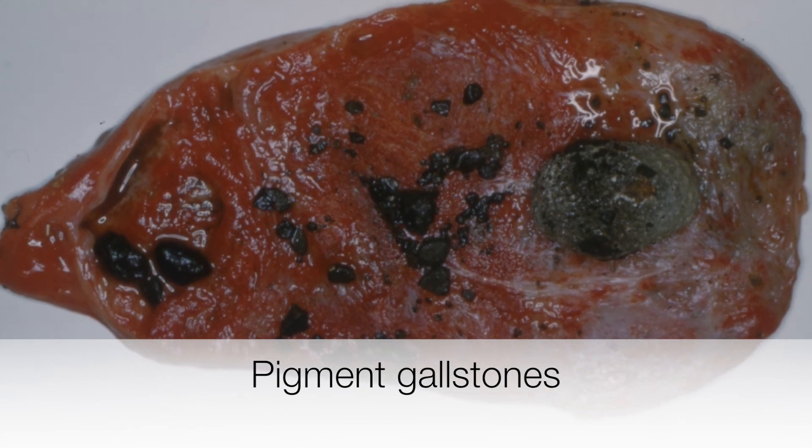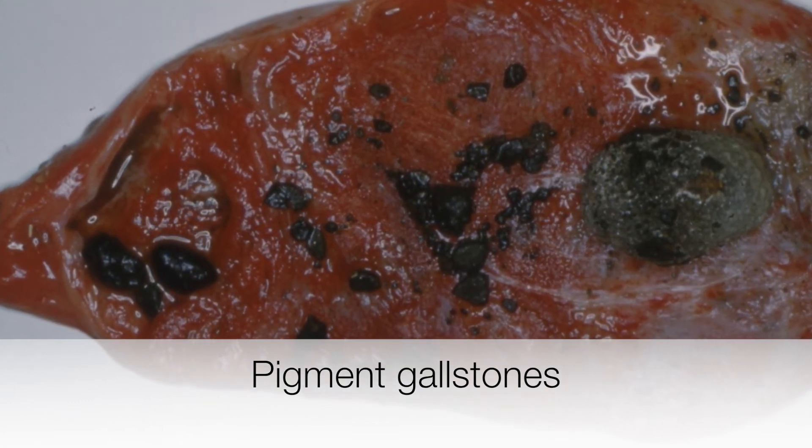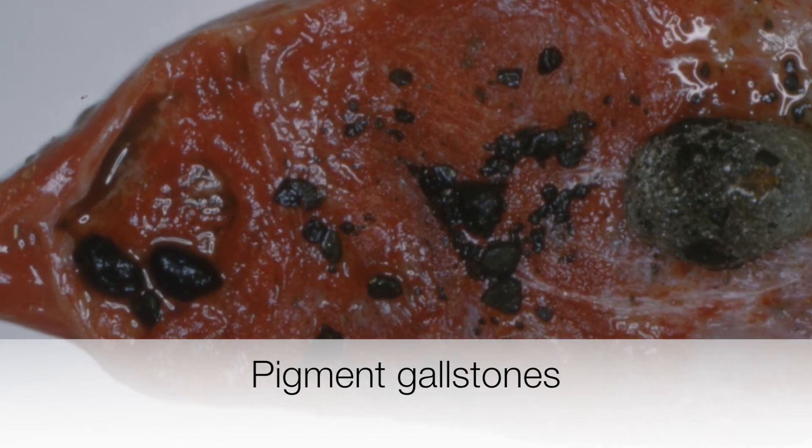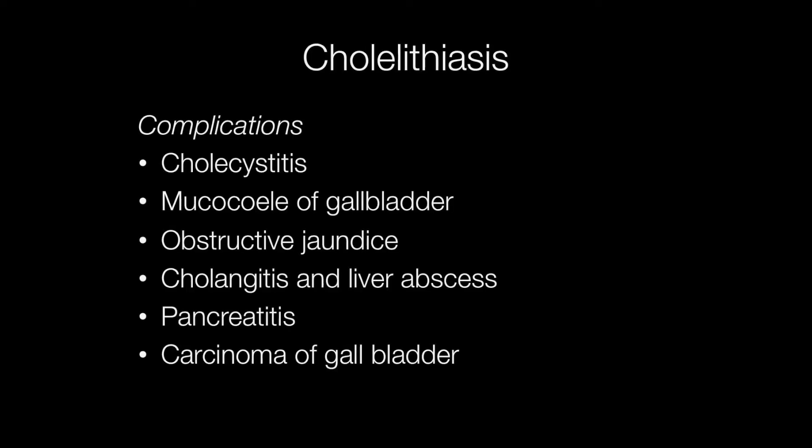This gallbladder contains small black stones, and these are obviously pigment gallstones. Complications of gallstones include cholecystitis — that's inflammation of the gallbladder — mucocele of the gallbladder, which occurs where the cystic duct is blocked by a stone and mucus collects in the gallbladder because it can't drain out; this is sterile. Other complications include obstructive jaundice, cholangitis and liver abscess formation, pancreatitis, and carcinoma of the gallbladder due to the chronic irritation by gallstones.